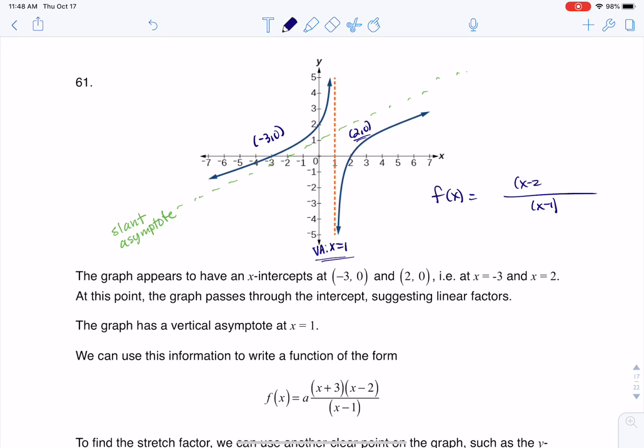Because I have this x-intercept at 2, I should have an (x - 2) in my numerator and because I have an x-intercept at negative 3, I should also have an (x + 3) up in my numerator.